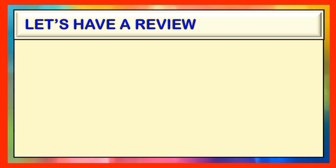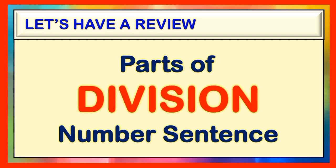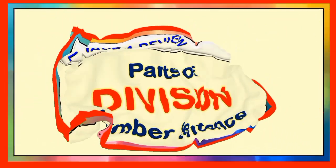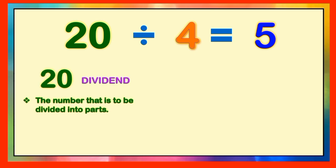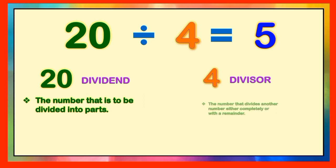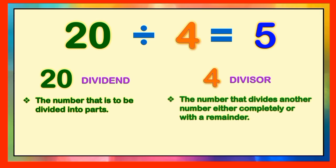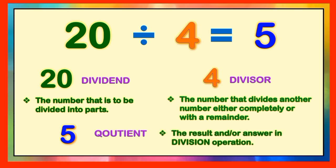Let's have first a review on the different parts of the division number sentence. I have here a division number sentence of 20 divided by 4 is equal to 5, wherein 20 is what we call the dividend — the number that is to be divided into parts. 4 is what we call the divisor, the number that divides another number either completely or with a remainder. And the digit 5 is what we call the quotient, the result and/or answer in a division operation.